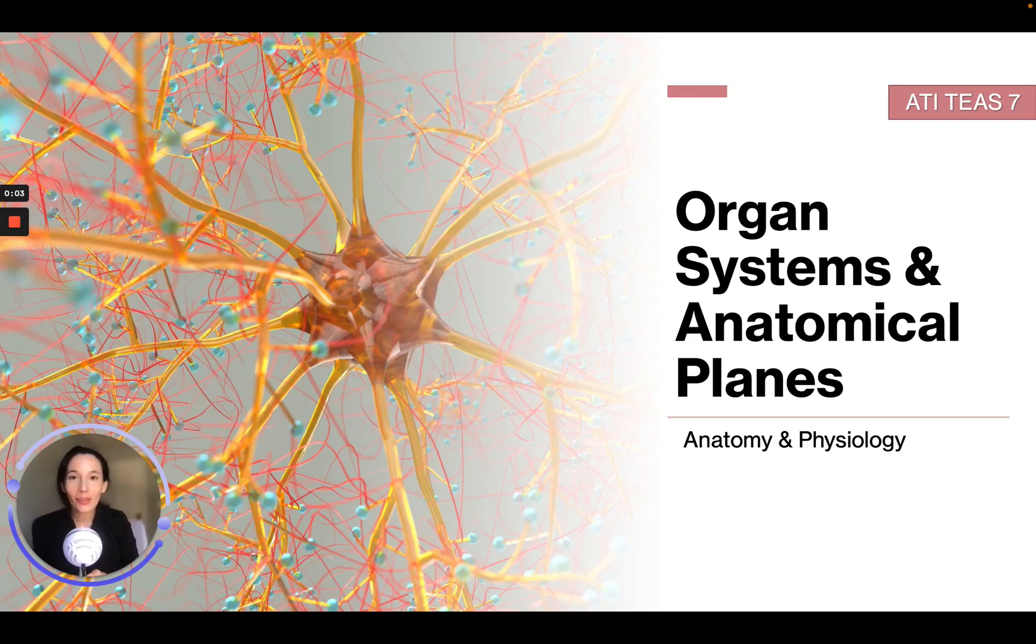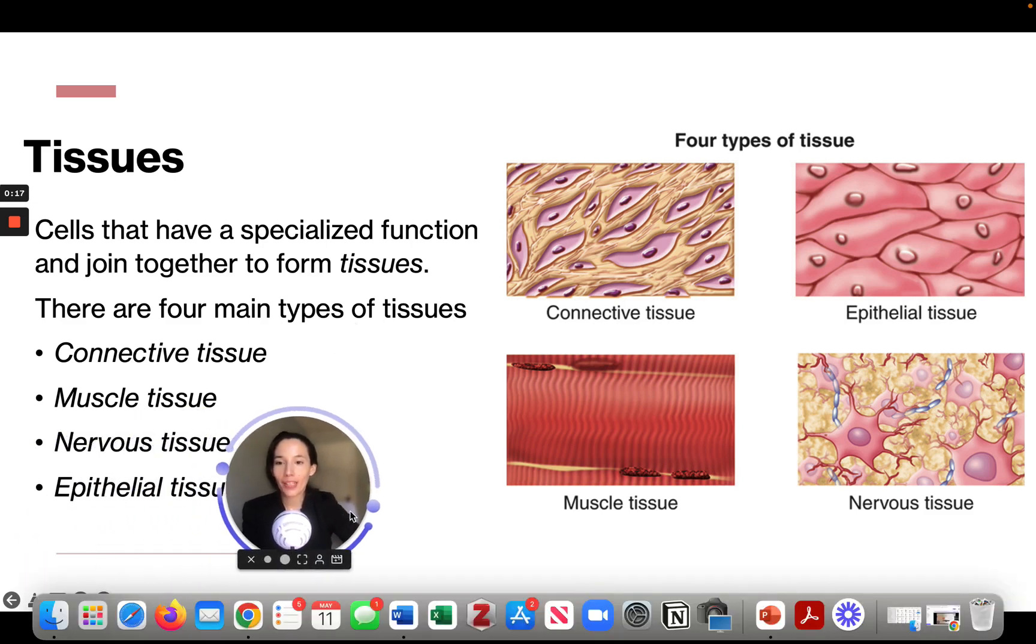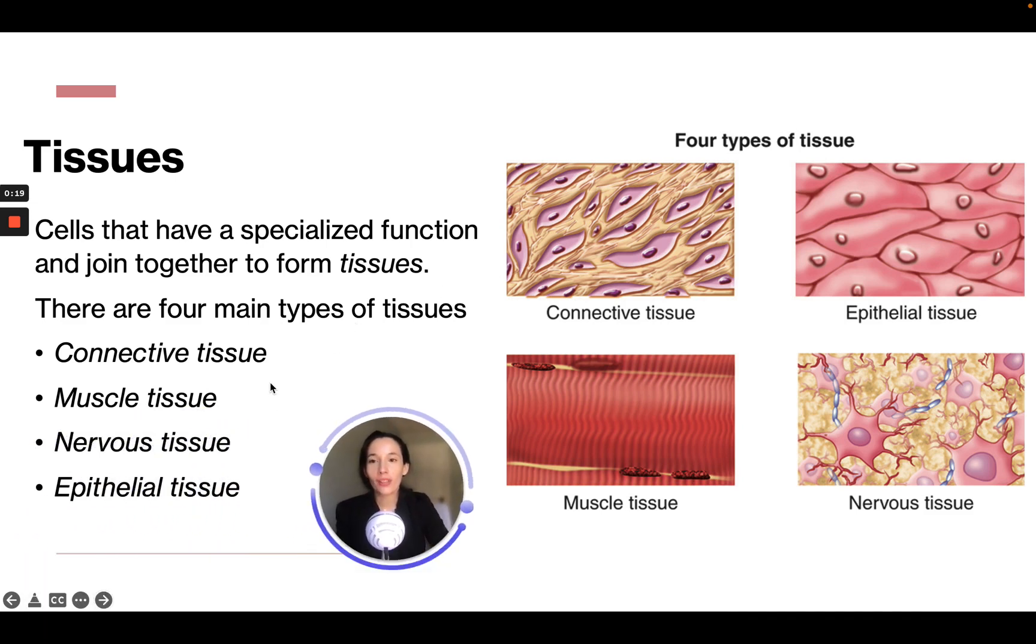Hello, and in this module we're going to be talking about organ systems and anatomical planes. So we're moving from the cell now into systems of the body. First, let's talk about tissues. Cells that have a specialized function and join together form tissues. There are four main types of tissues you can see over here.